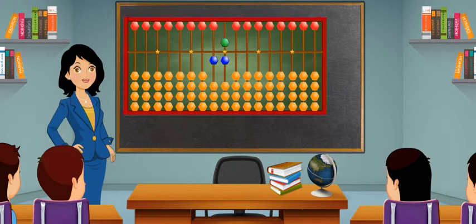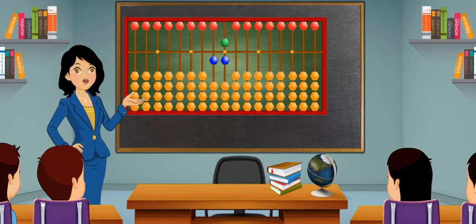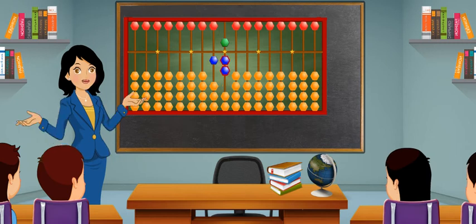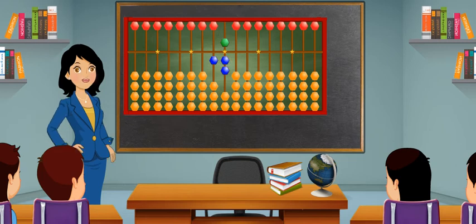To show number 17, one on the tens place will remain the same and bring one more earthen bead upwards so that one heaven bead and two earthen beads touch the skyline to show seven on the ones place.